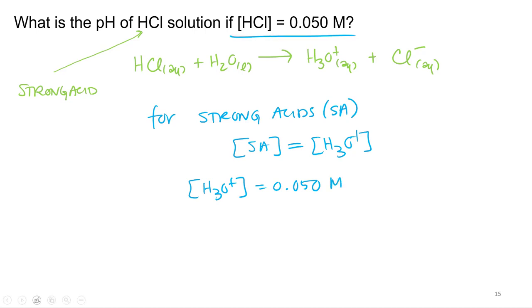And then what are we gonna have to do? Now that we know our concentration of hydronium, then we can plug it into our equation. Negative log of hydronium equals negative log of 0.050.